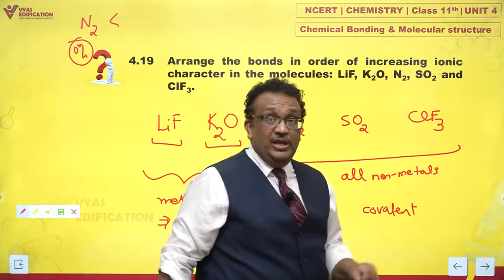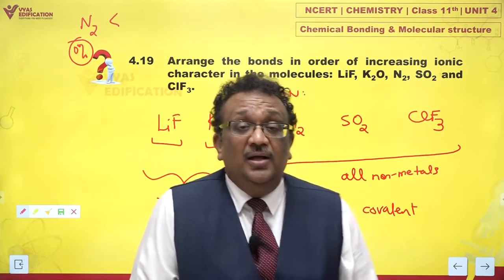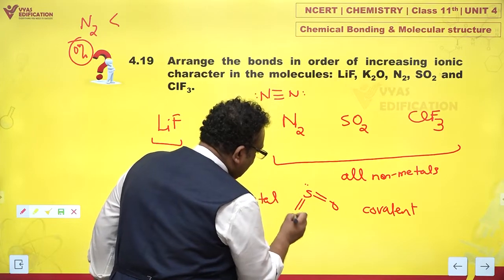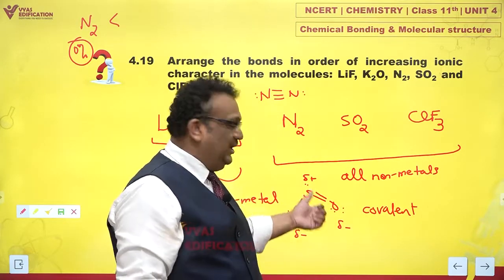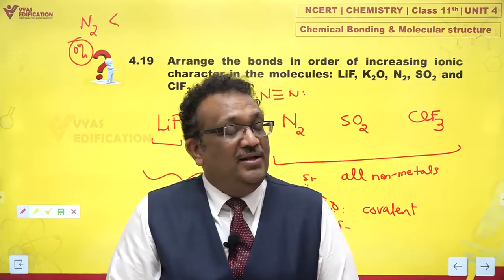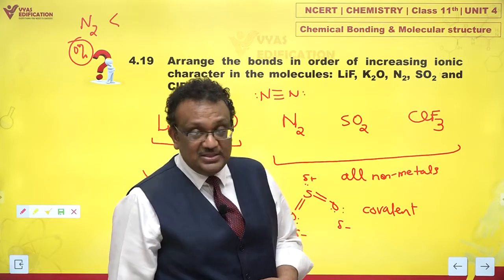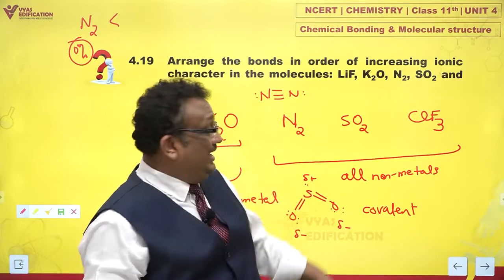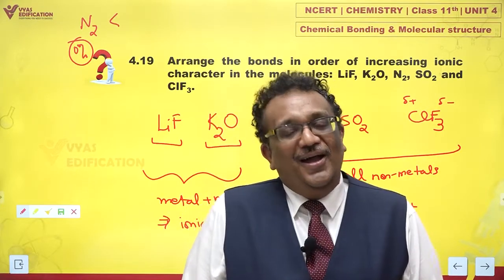Between sulfur and oxygen, is there an electronegativity difference? Yes. Between chlorine and fluorine, is there an electronegativity difference? Yes. Since there is a difference in electronegativity between sulfur and oxygen, the bonds in SO₂ will be polar. Sulfur acquires a delta plus charge and oxygens acquire a delta minus charge. The moment there is a slight positive charge separated from a slight negative charge by a finite distance, there is ionic character. So SO₂ has acquired some ionic character, and the same goes for ClF₃ — fluorine is more electronegative than chlorine, so chlorine carries delta plus and fluorine atoms carry delta minus.